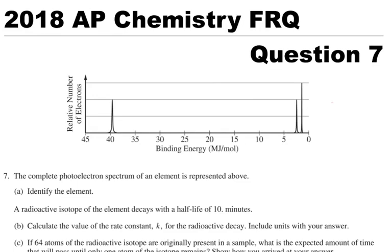I'm going to go over the 2018 AP Chemistry FRQ question number seven. Now if you've seen a photoelectron spectra before, you can kind of go left to right on here the way they're done for the AP and label each of these with the electron configuration.